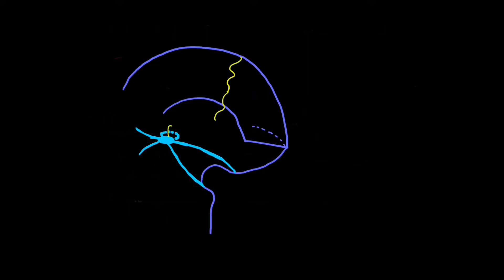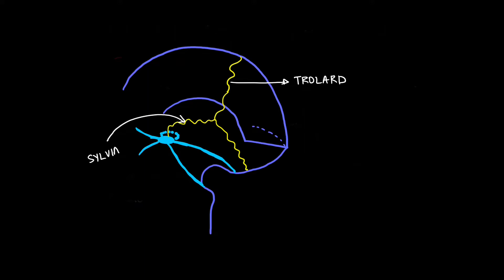Now we are going to see the three named cortical veins. These anastomose with each other and connect to the dural venous sinuses. The vein of Trolard is across the parietal lobe; the vein of Sylvian and vein of Labbé are also shown. The vein of Trolard drains into the superior sagittal sinus. The sylvian vein drains into the cavernous sinus, and Labbé drains into the transverse sinus. They anastomose with each other on the cortical surface along with other unnamed cortical veins.